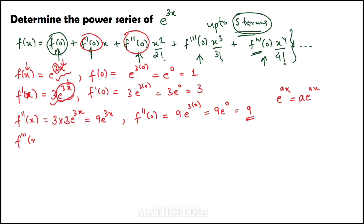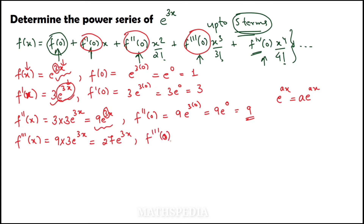Next, the third derivative: differentiating 9e^(3x), I bring down a 3, giving f'''(x) = 27e^(3x). The value of the function at x = 0 is f'''(0) = 27·e^(3×0) = 27·e^0 = 27.